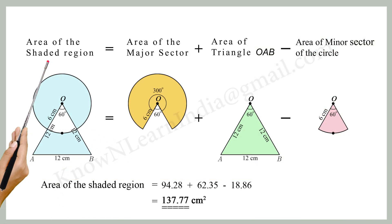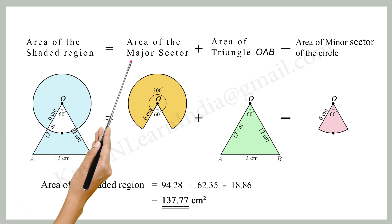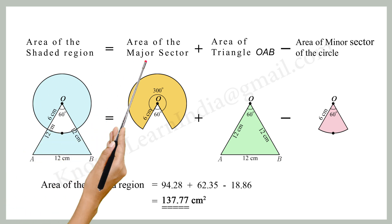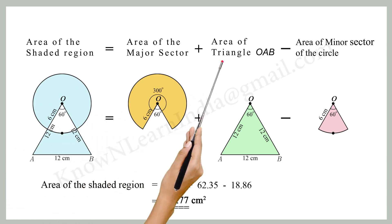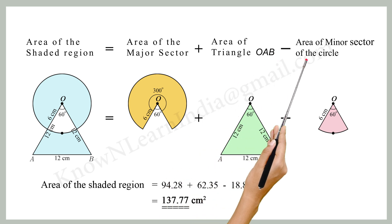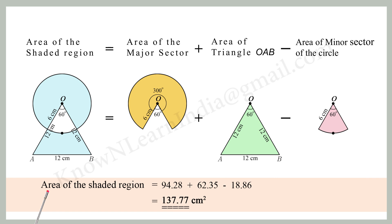Area of the shaded region equals the area of the major sector plus the area of triangle OAB minus the area of the minor sector of the circle: 94.28 + 62.35 − 18.86 = 137.77 cm².